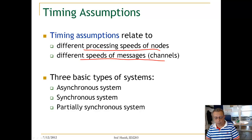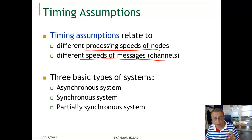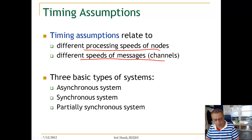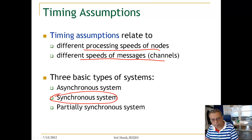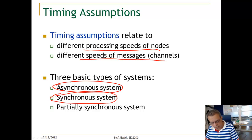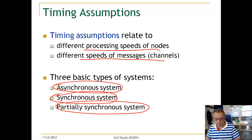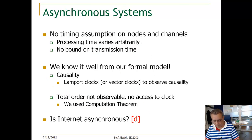We know from the first lecture that we have three basic types of systems: synchronous systems, asynchronous systems, and partially synchronous systems. These are the three types of systems that we have.